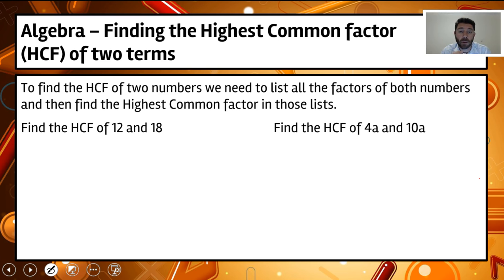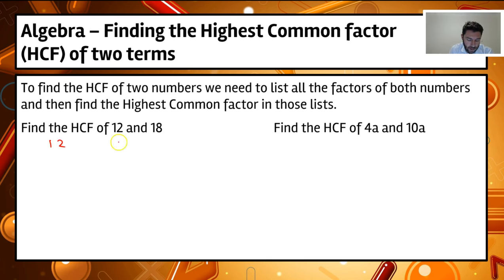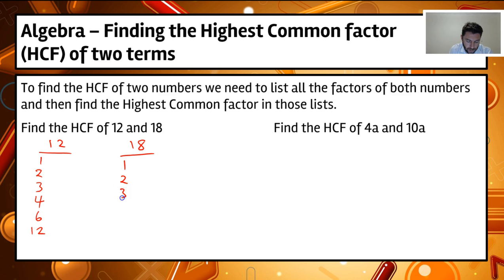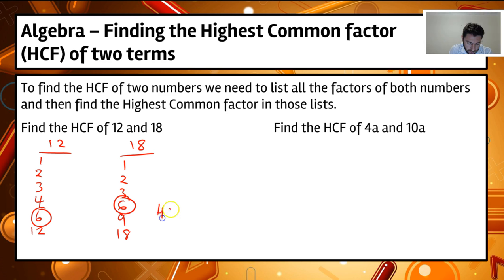Now let's look at finding the highest common factor of two terms. We list the factors for both terms and then determine what's the highest common one. For 12 and 18: the factors of 12 are 1, 2, 3, 4, 6, and 12. The factors of 18 are 1, 2, 3, 6, 9, and 18. Looking at the two lists, the highest common factor for both is actually 6. So the HCF equals 6.